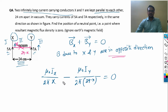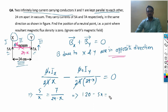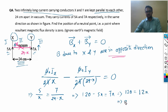Cancelling μ₀ and 2π from both sides: 5/x = 7/(24 − x). Cross-multiplying: 5 × (24 − x) = 7x, giving 120 − 5x = 7x, so 120 = 12x, therefore x = 120/12 = 10 centimeters.